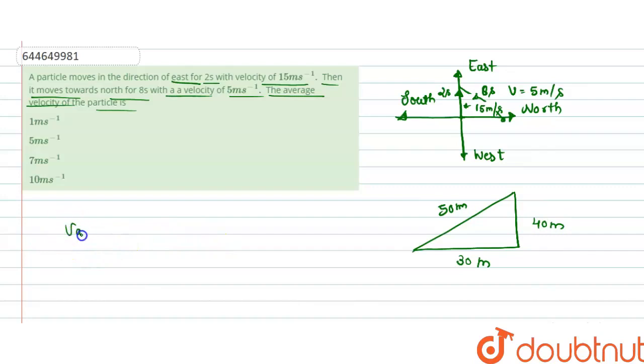Average velocity equals total displacement divided by total time.